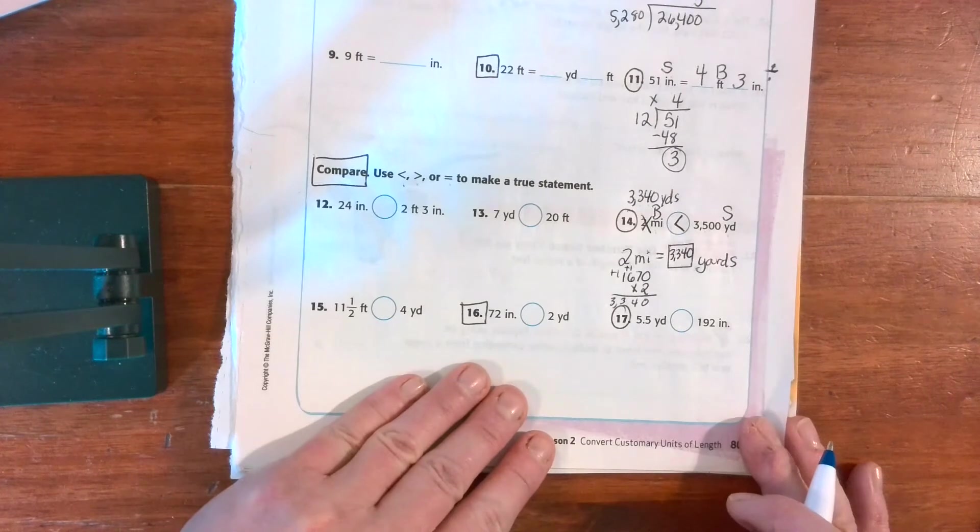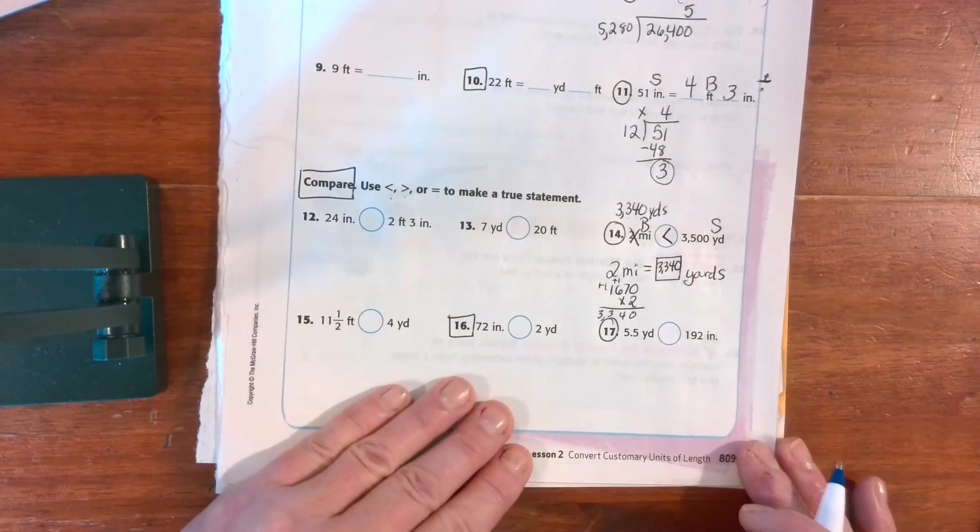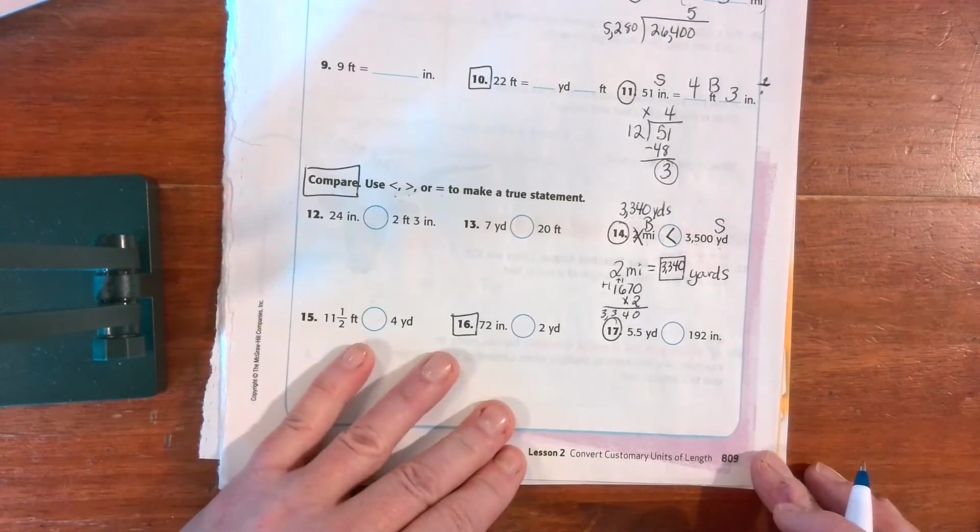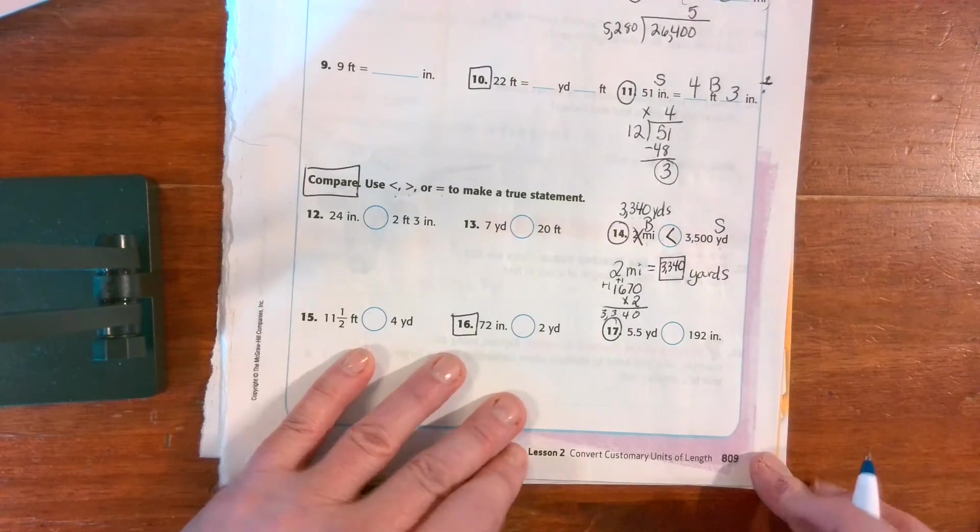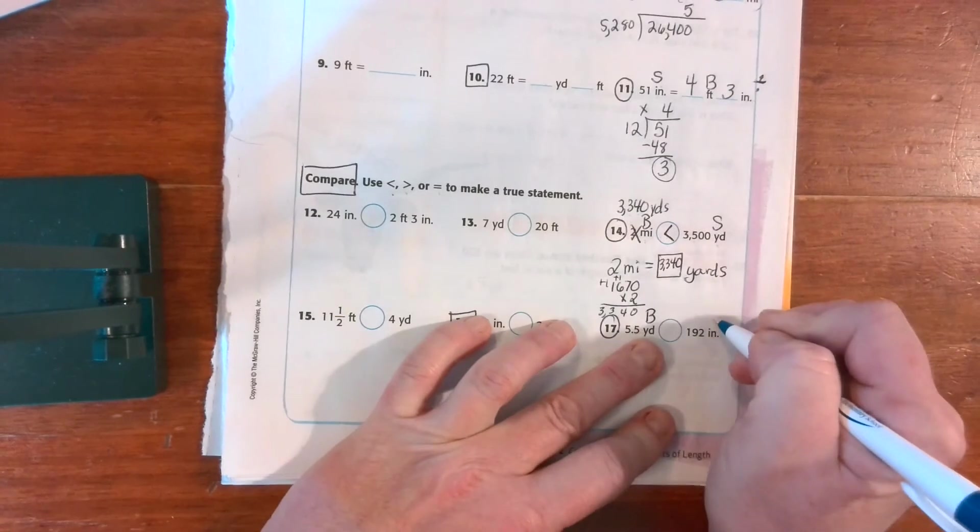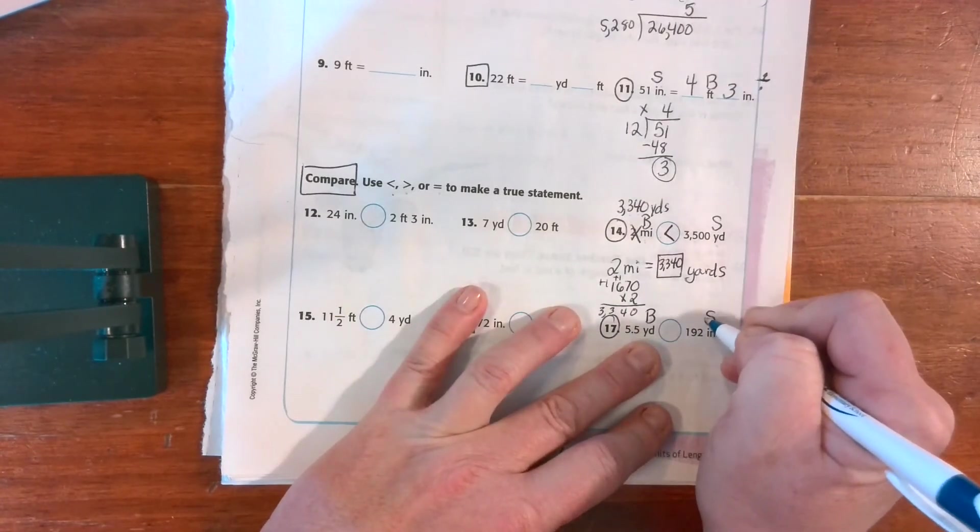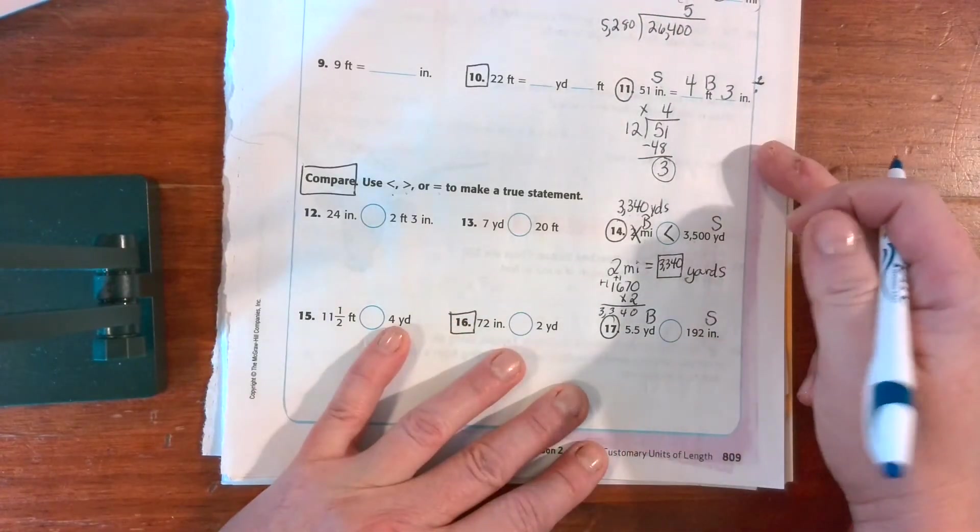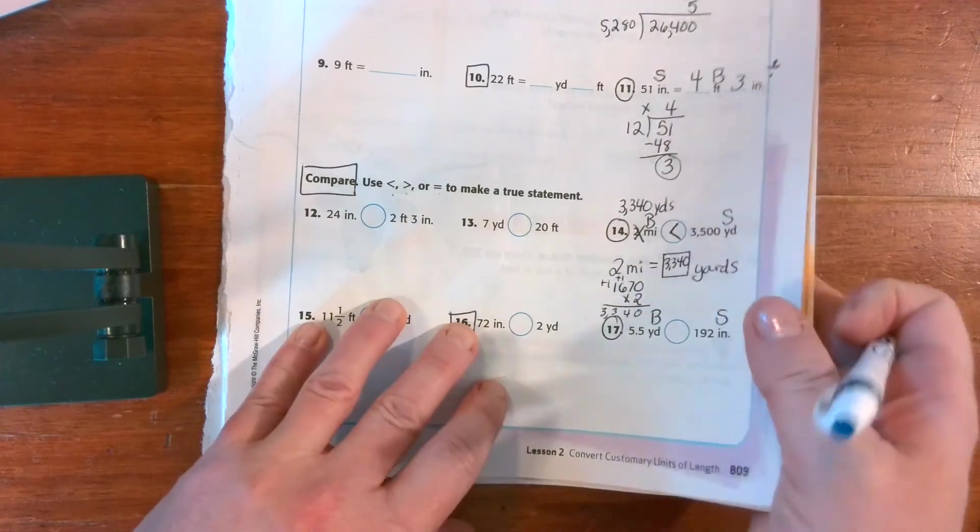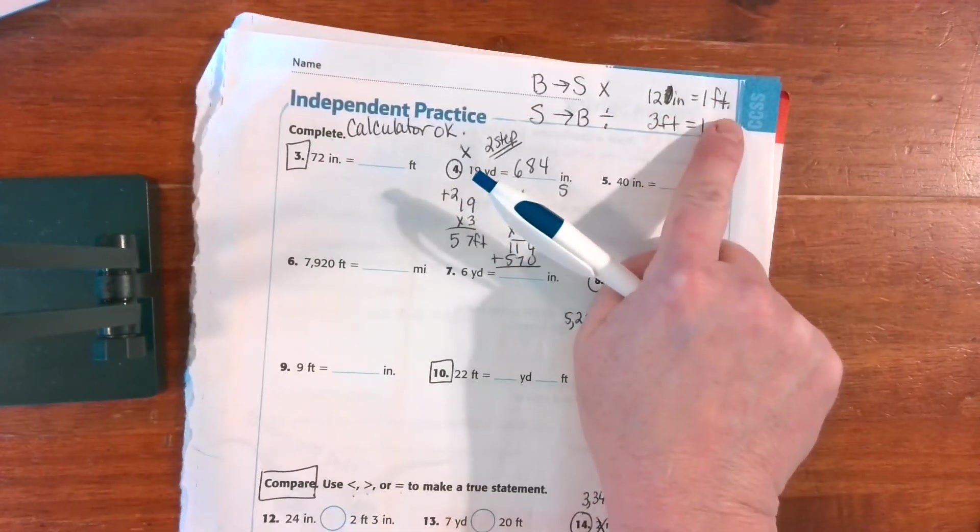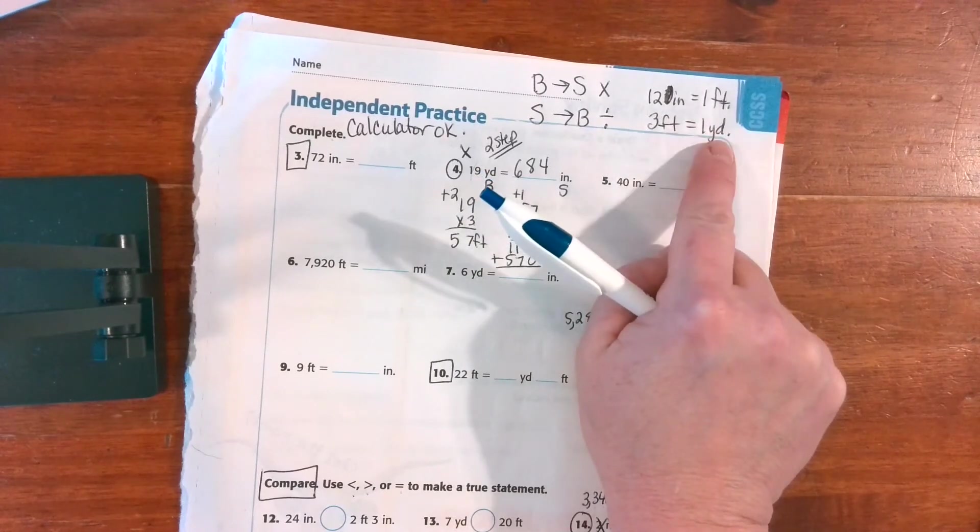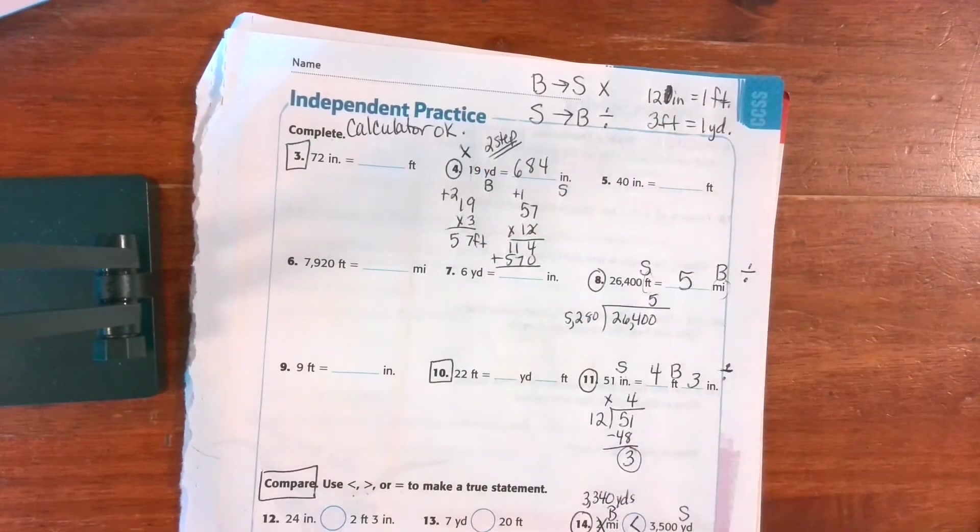All right, we're going to do one more, and then I'll leave you to do your three practice problems. And then you're going to check them with me before you move on. So we have yards, which is big, to inches, which is small. And again, it's yards to inches. But I don't have that formula because I only memorized feet to yards and inches to feet. Which means I'm going to have to go from yards to feet and feet to inches.